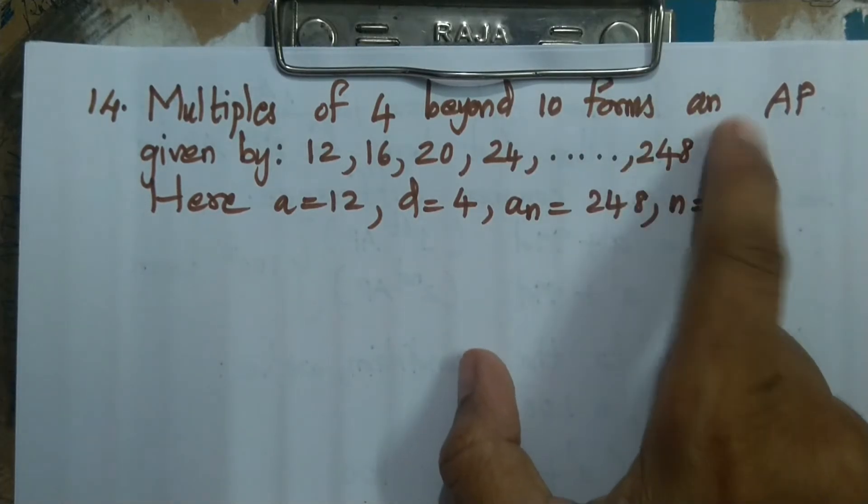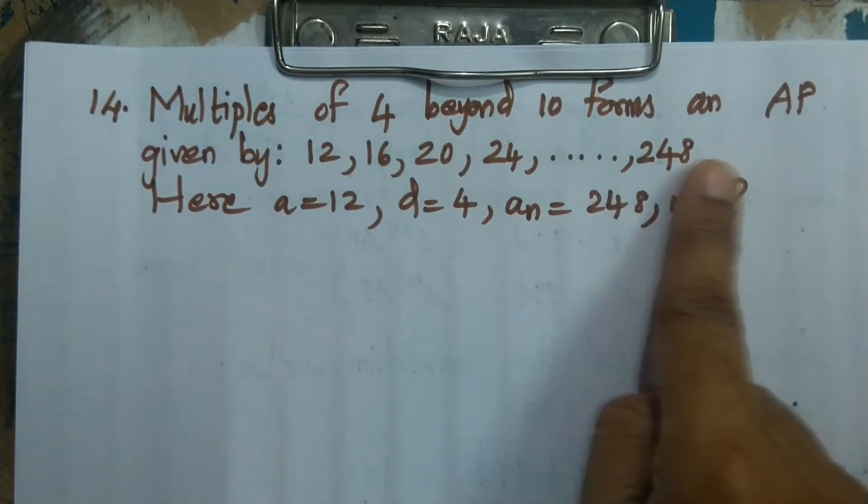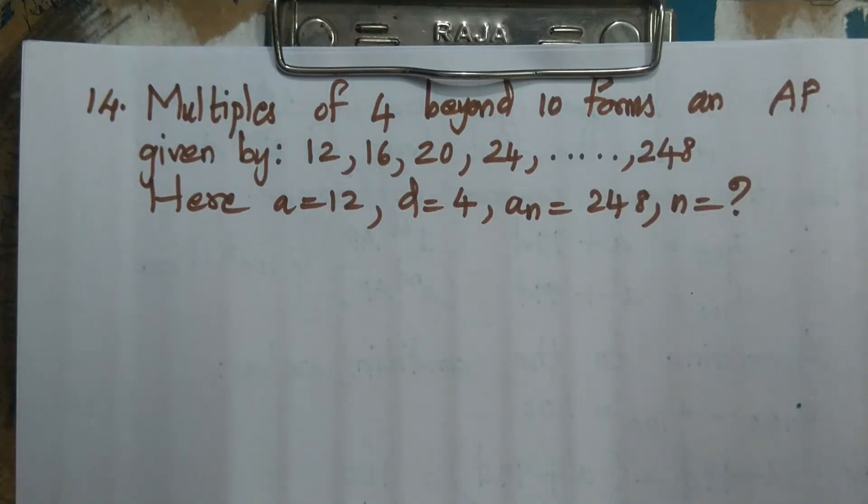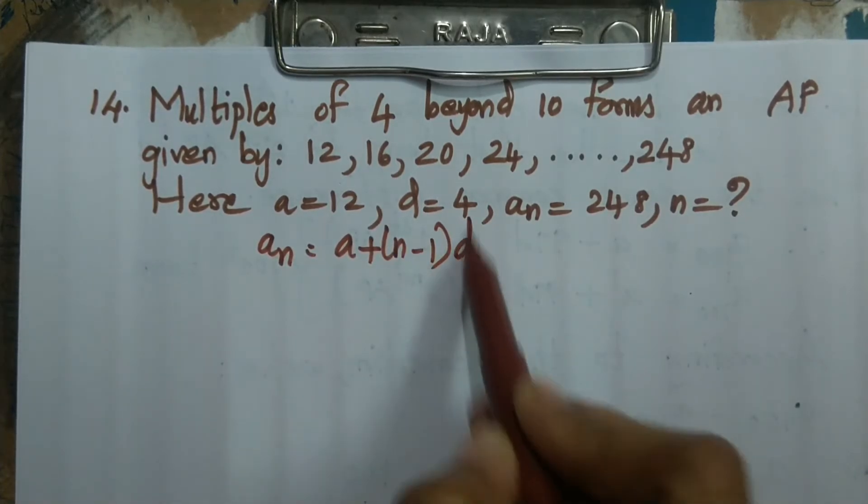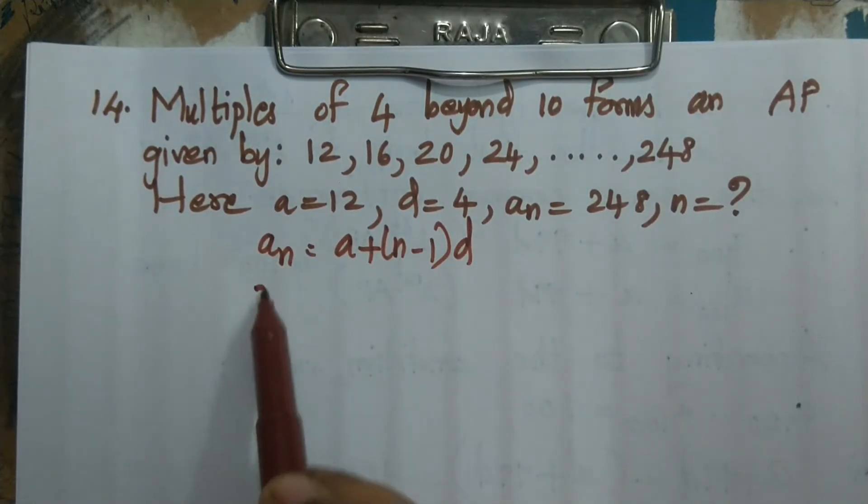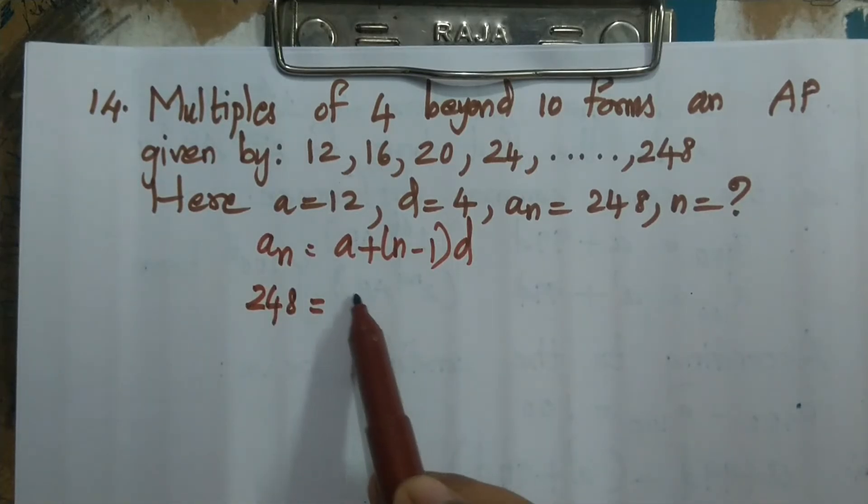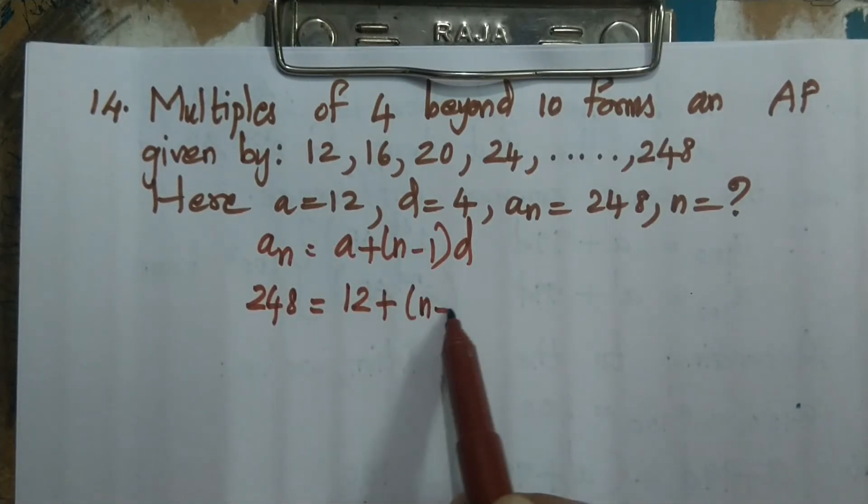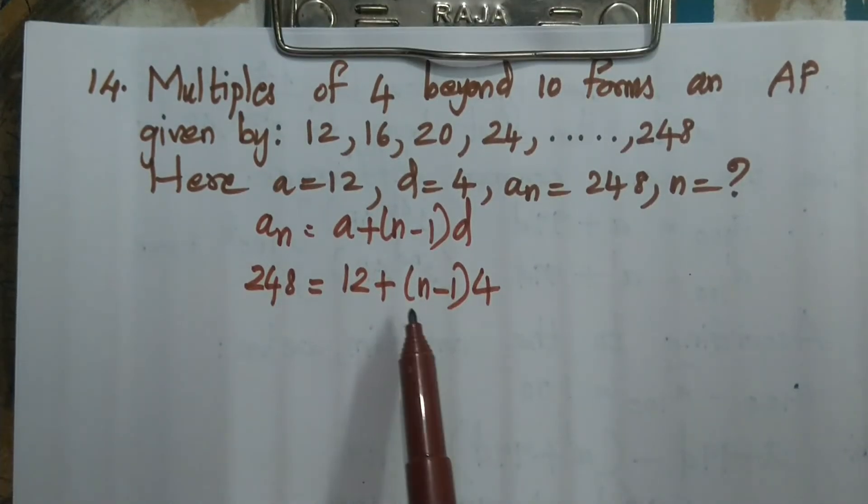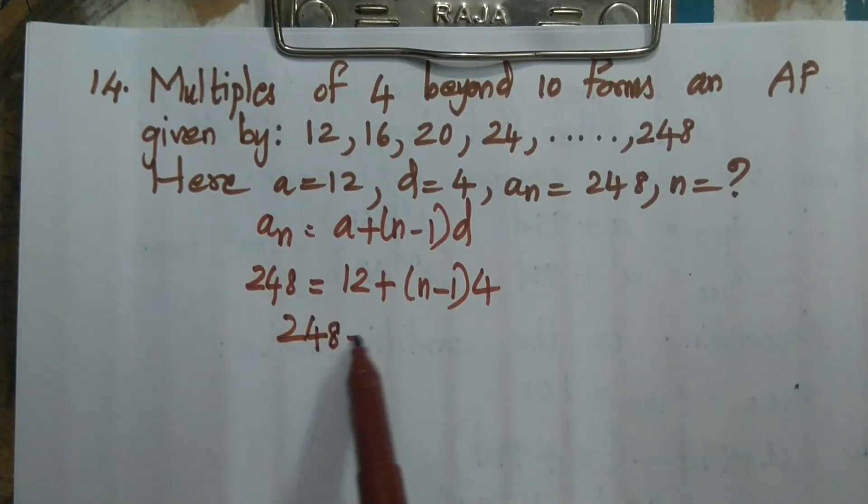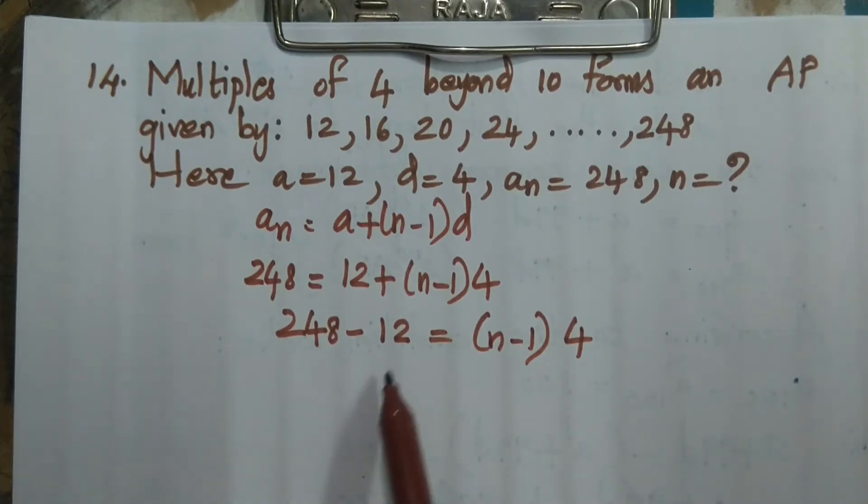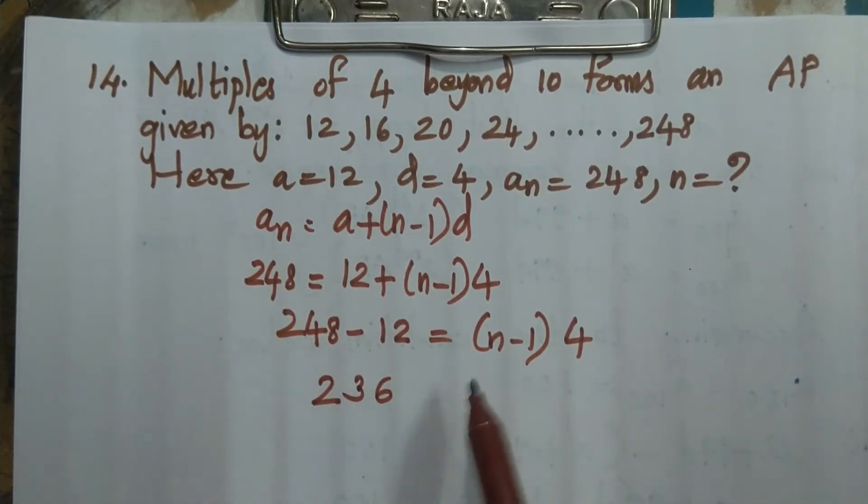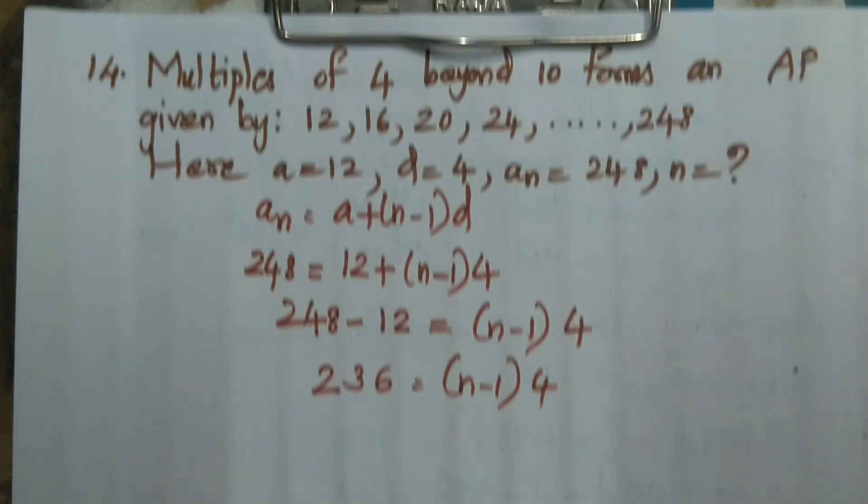So if I find out what is the n value for this, that automatically will become the number of terms in the series. So basically, I am going to do A_n formula. A_n equal to A plus n minus 1 into D. So A_n and n are at the same time, 248. Last term is n. So 12 plus n minus 1 into 4.